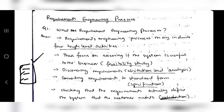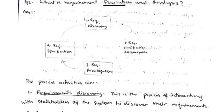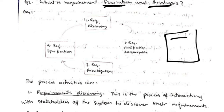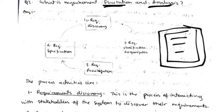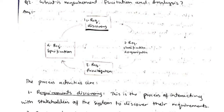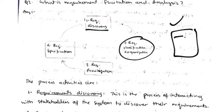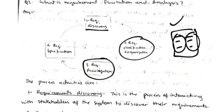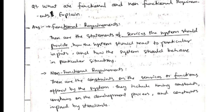Requirement elicitation means finding out what the actual requirements are, and analysis means checking whether those requirements are within your capability to fulfill. The stages are: requirement discovery — finding what the requirements are; classification — grouping similar requirements together and prioritizing which is most important; and then specifying them to the customer.